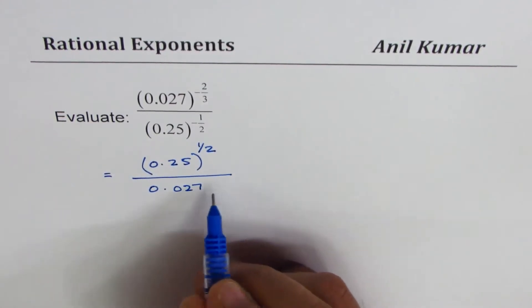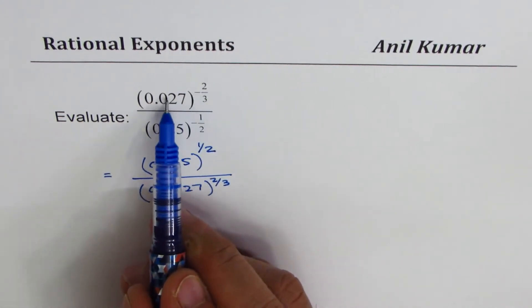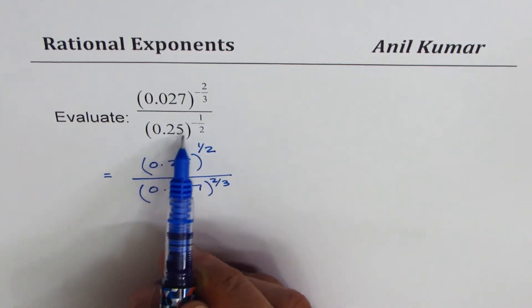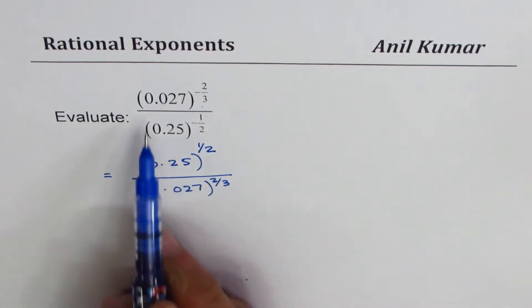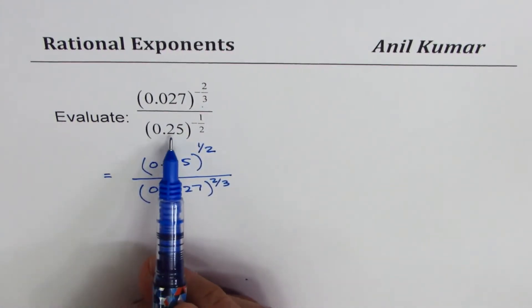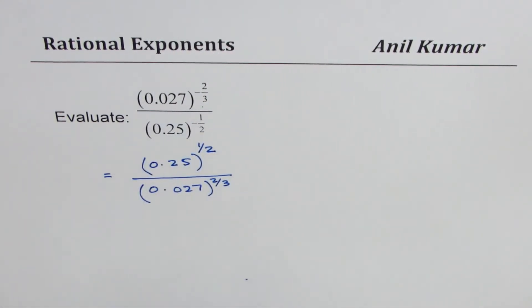(0.027) to the power of 2 over 3. Since this is negative, I'm writing this as 1 over (0.027) to the power of 2 over 3, so that comes in the denominator and this moves to the numerator.